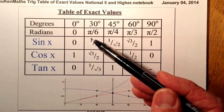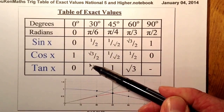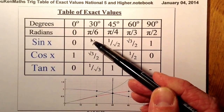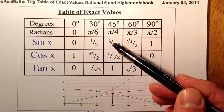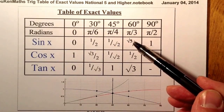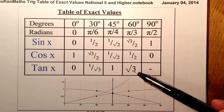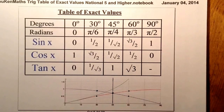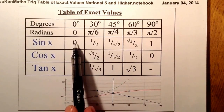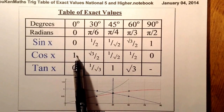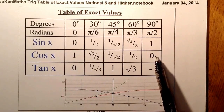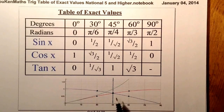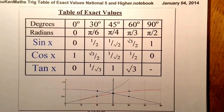I can also see on the tan row: I've got 1 over root 3, with 1 and root 3 on the numerator. 1 divided by 1 gives me 1, and root 3 and 1 gives root 3. From the graph I can see tan is 0 at 0 degrees and 1 at 45 degrees, giving root 3 at 60. At 90 degrees, the tan graph is undefined, so there's no answer going in there.